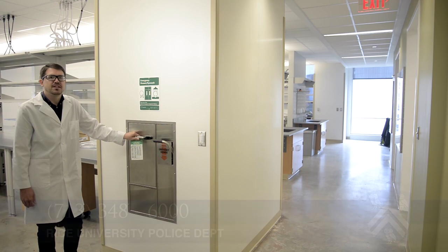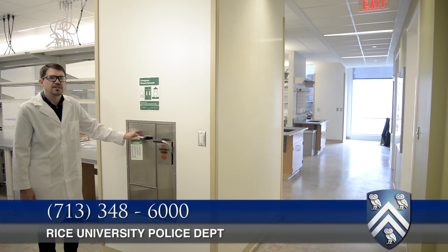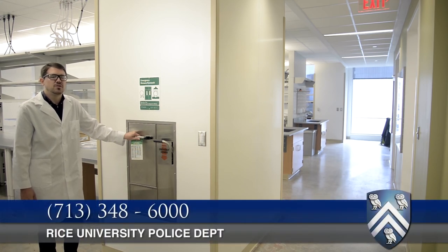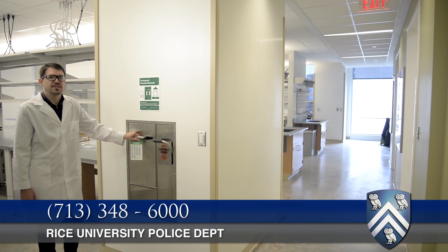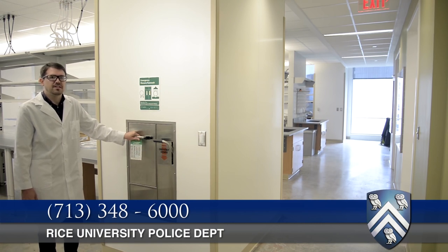After any injury or emergency, contact RUPD at 713-348-6000 or extension 6000 from any campus telephone. Make sure to know your building and room number so you can communicate that clearly, and fill out an accident and injury report form.